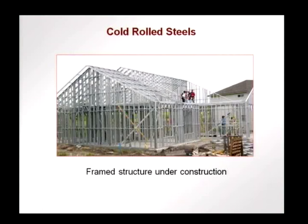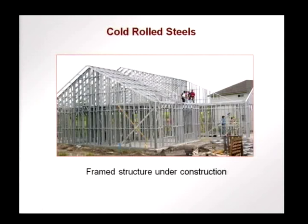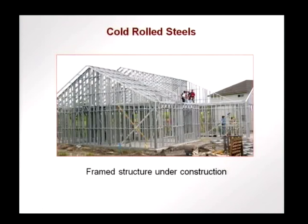This is an example of a frame structure under construction where the vertical elements, diagonal struts, and roofing elements are all made out of sections of cold rolled steel. This could have been traditionally done with timber, and now cold rolled steel is replacing this, leading to fast and efficient construction.